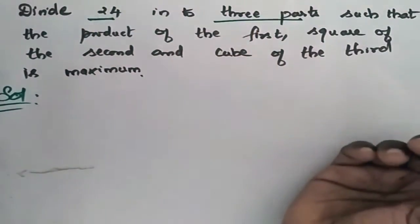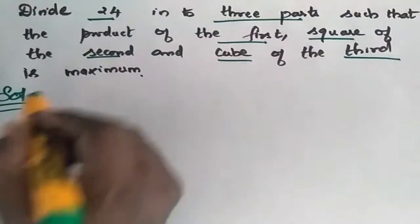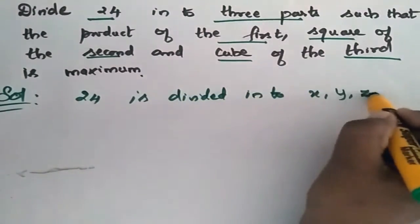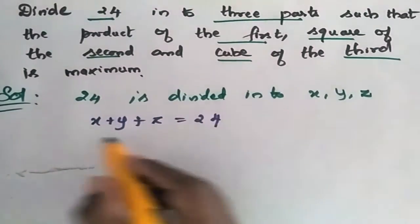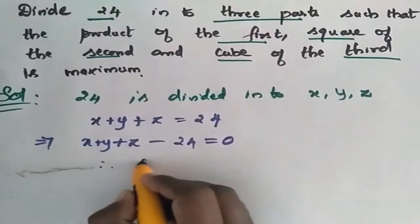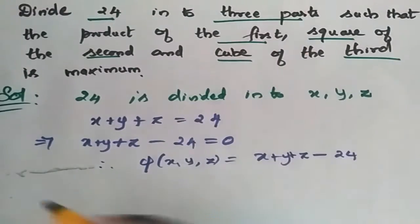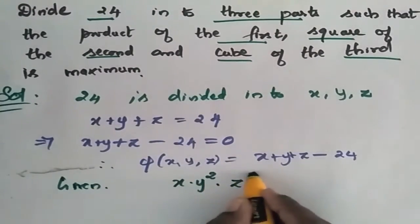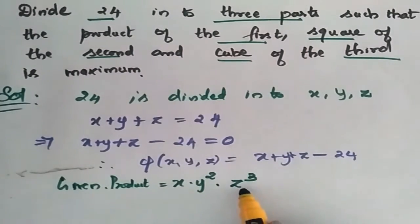Divide 24 into 3 parts such that the product of first, square of second, cube of third is maximum. The solution is: 24 divided into X, Y, Z such that X plus Y plus Z is equal to 24, that is X plus Y plus Z minus 24 is equal to 0. The product given is equal to X into Y square into Z cube.